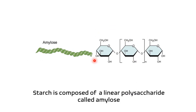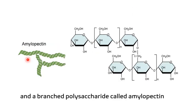Starch polymers come in two forms. These are amylose, which is a linear polysaccharide, and a branched polysaccharide called amylopectin.